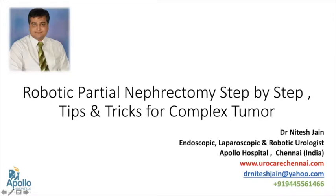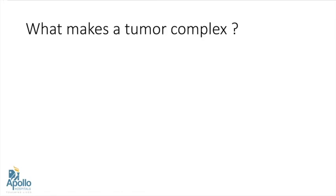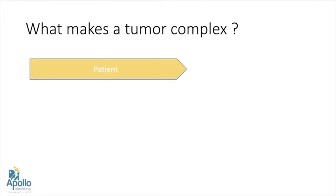Today I'll be speaking about robotic partial nephrectomy — step by step and tips and tricks for complex tumors. What makes a tumor complex? The patient factor, like diabetes, hypertension, and obesity, increases fat adhesibility onto the tumor and the kidney, which increases the complexity of the surgery.